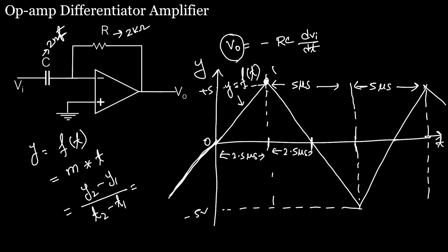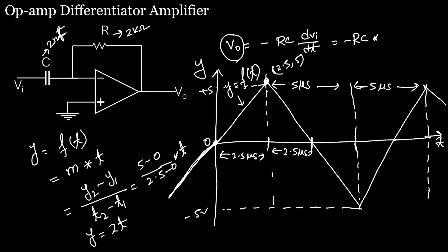The point (2.5 μs, 5 V) and the origin (0, 0) give us the slope: m = (5 - 0)/(2.5 - 0) = 2. So Vi = 2t (where t is in microseconds). Substituting into V0 = -RC · d(Vi)/dt: V0 = -RC · d(2t)/dt = -(2×10³)(2×10⁻⁹) · 2.